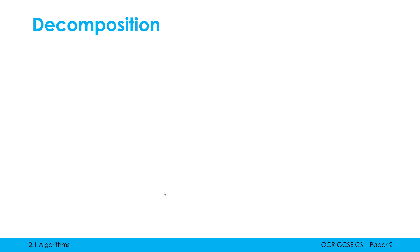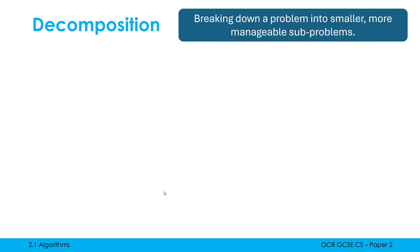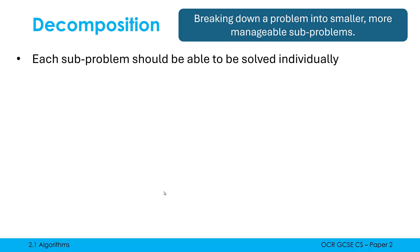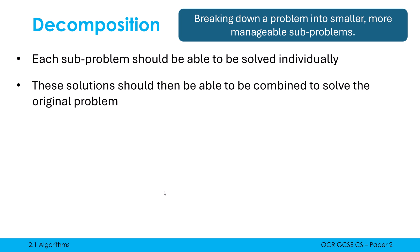Decomposition is a separate principle — try and keep it distinct from abstraction in your mind. Decomposition is breaking down a problem into smaller, more manageable sub-problems. Each sub-problem should be solvable individually, and each is smaller than the original problem. The goal is that once you've solved all the individual sub-problems, those solutions can be combined to solve the original problem. It can be easier said than done, but it's often far simpler than tackling the original massive problem directly.